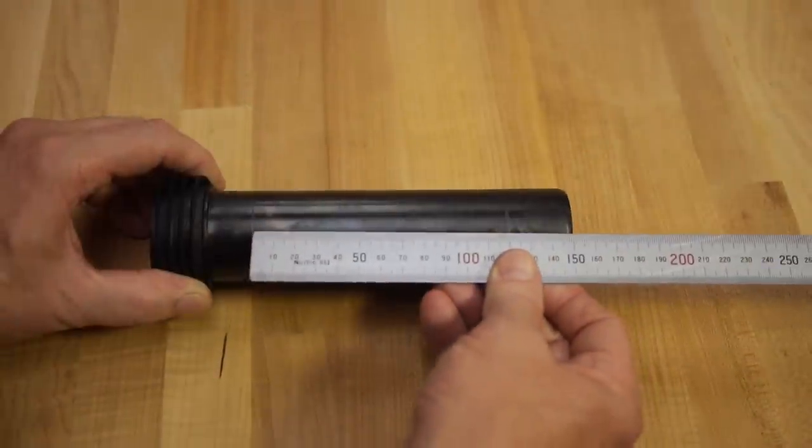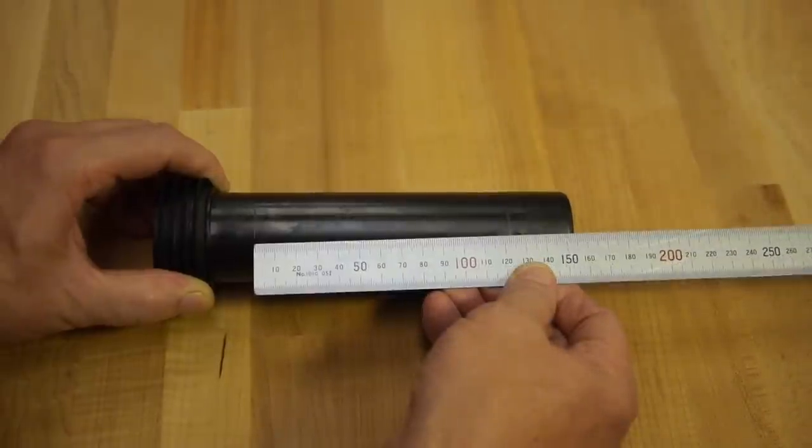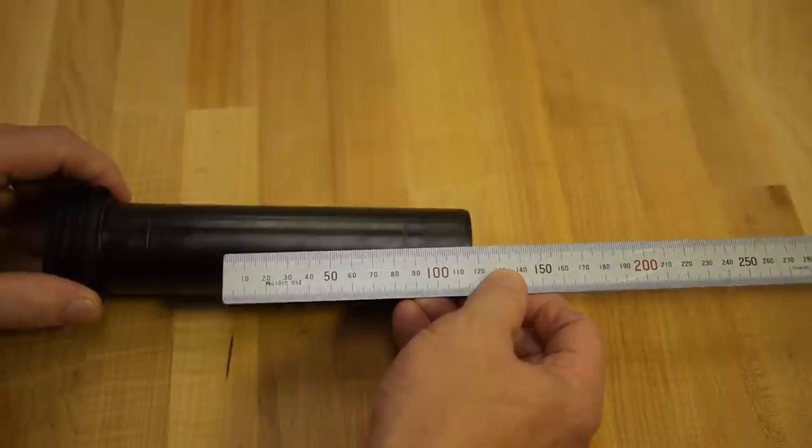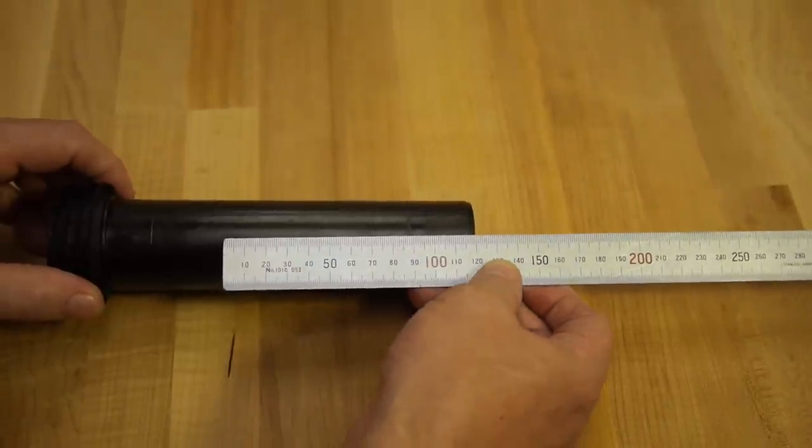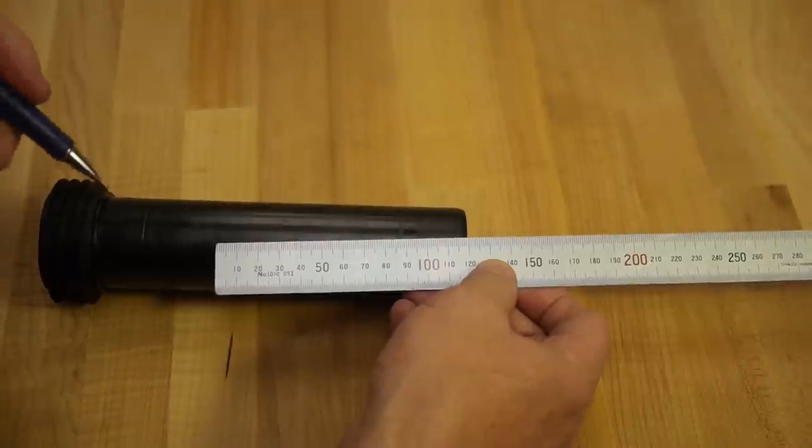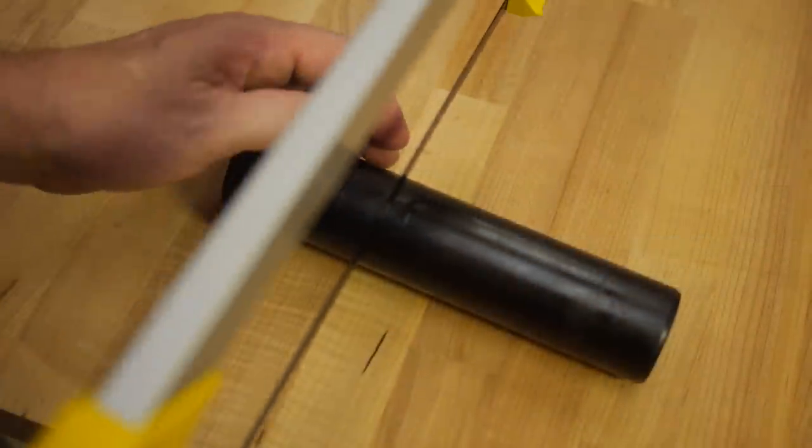Step 3: With both pipes marked, measure the length between the two markings and add 3 millimeters. Use that measure to mark the cutting line from the end opposite the gasket and saw off the excess.